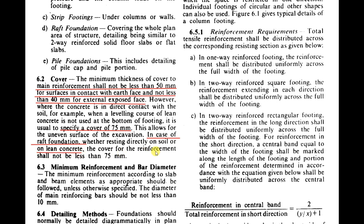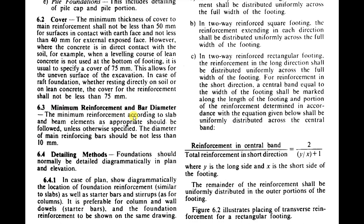In the case of raft foundation, whether resting directly on soil or on lean concrete, cover to reinforcement shall not be less than 75 mm. Regarding minimum reinforcement and bar diameter: the minimum reinforcement follows slab and beam elements. The diameter of the main reinforcing bar shall not be less than 10 mm. Minimum reinforcement percentage is 0.12% for HYSD bars and 0.15% for mild steel bars.